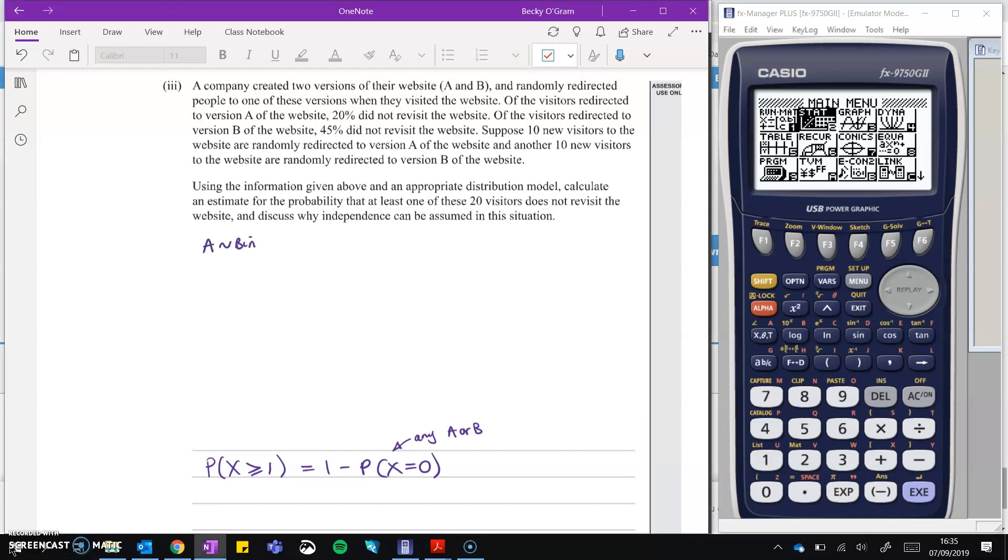So we need to work out the probability of getting none revisiting from A and none revisiting from B, and that will give us this bit of X equals zero. So nobody revisits no matter what. And then we'll be able to take it away from one. So let's think about A. So A is a binomial distribution, and 10 people get directed there. So we've got 10 trials on A, and the chance of them not revisiting is 0.2. For B, it's another individual binomial. There's 10 people going there, and the chance of them not revisiting is 0.45.